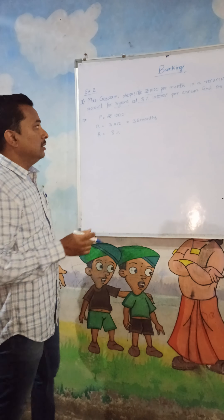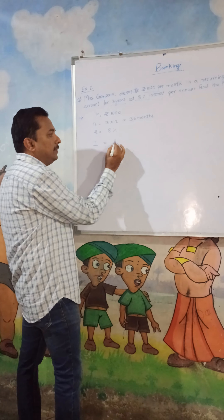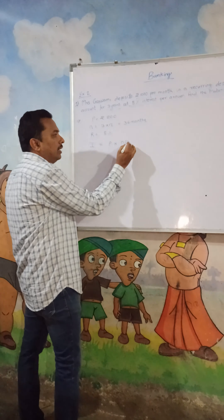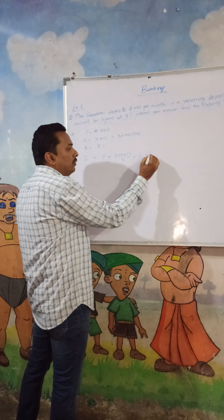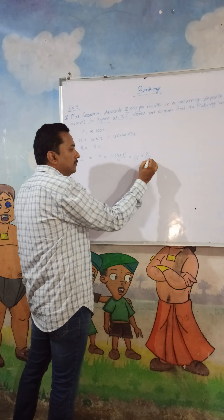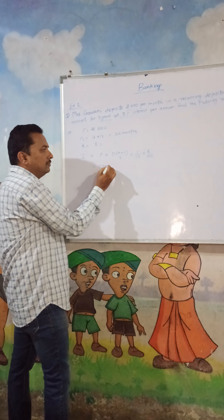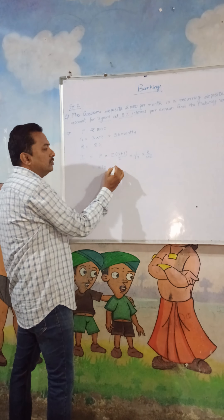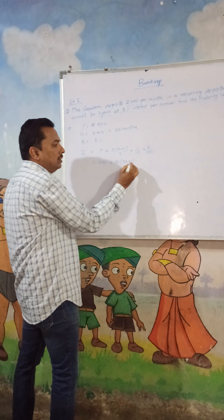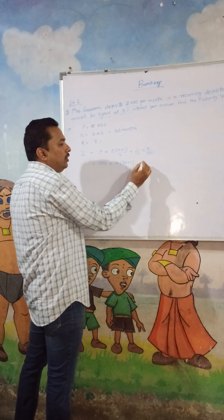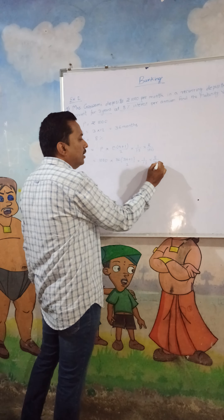We have to find the maturity value, but before that we have to find the interest. The interest formula is: I = P × n(n+1)/2 × 1/12 × r/100. Substituting the values: P is rupees 1000, n is 36, so we have 1000 × 36 × (36+1)/2 × 1/12 × 8/100.